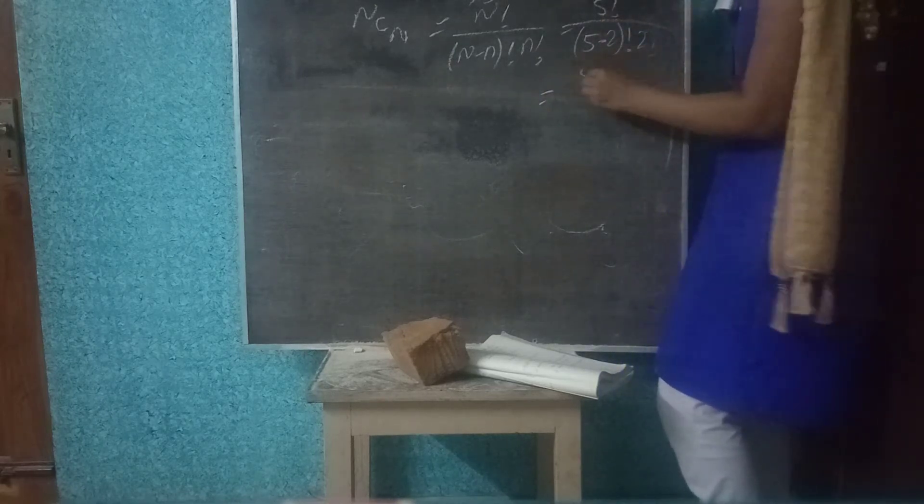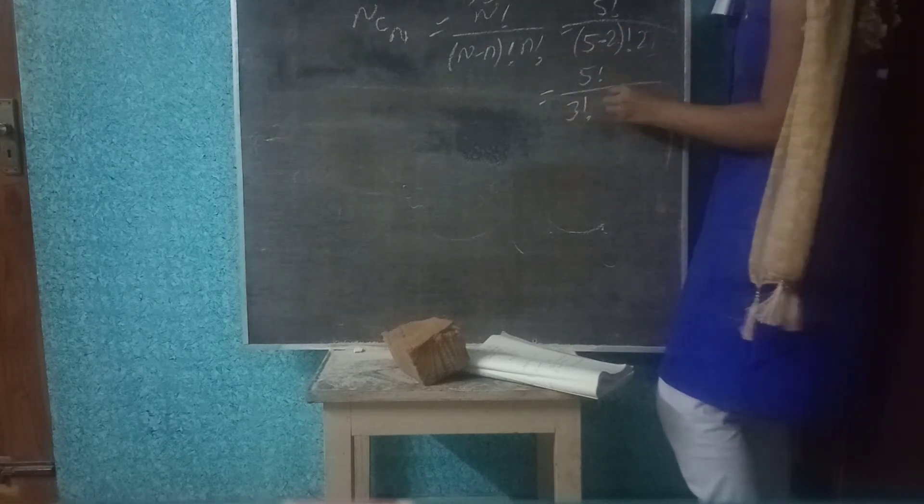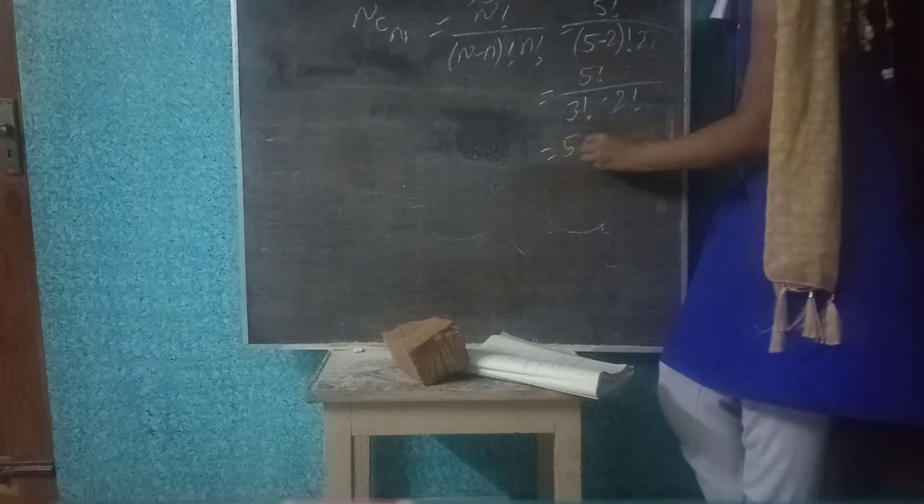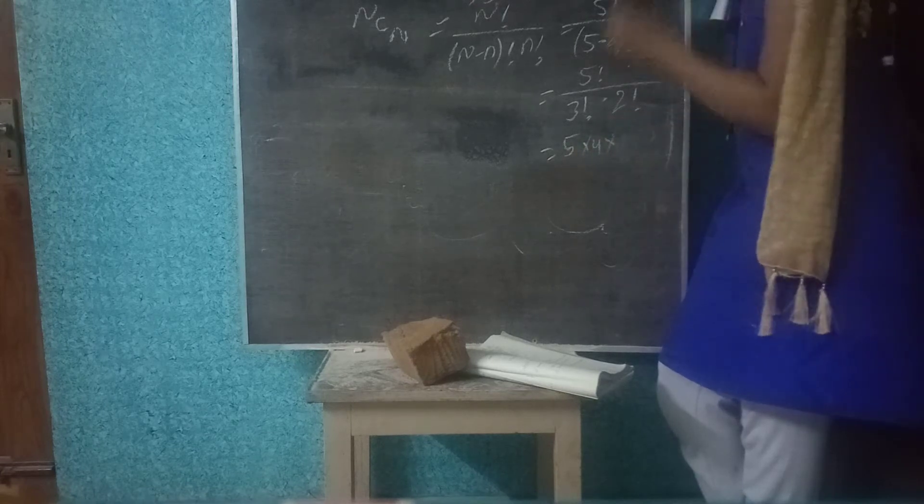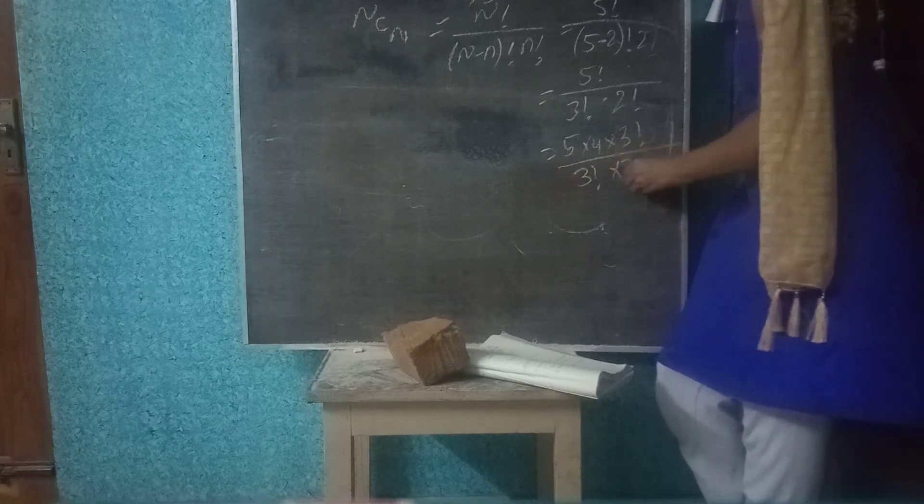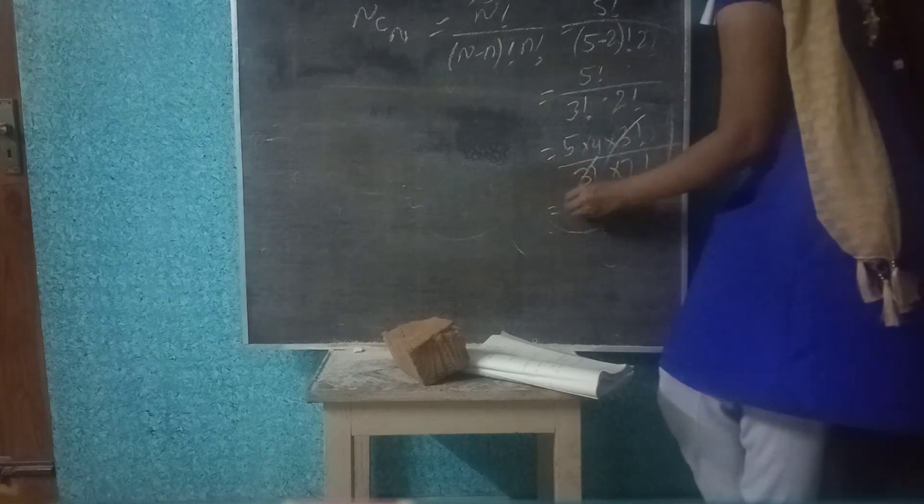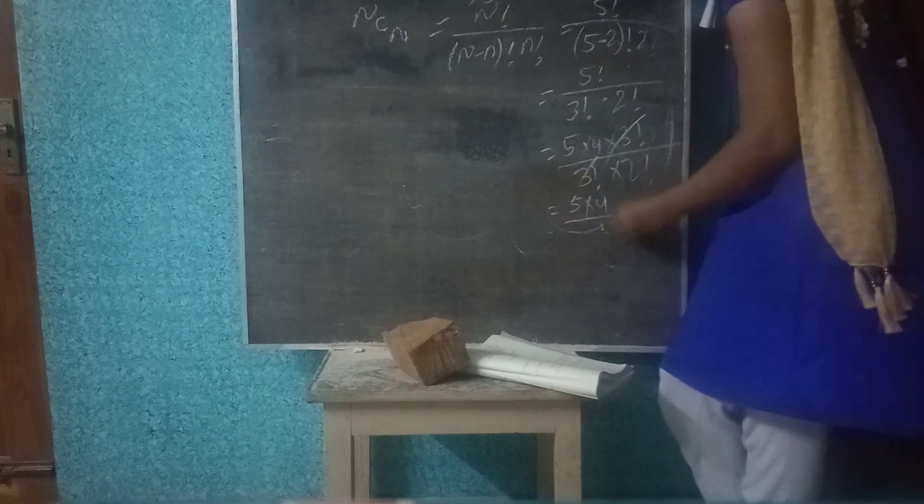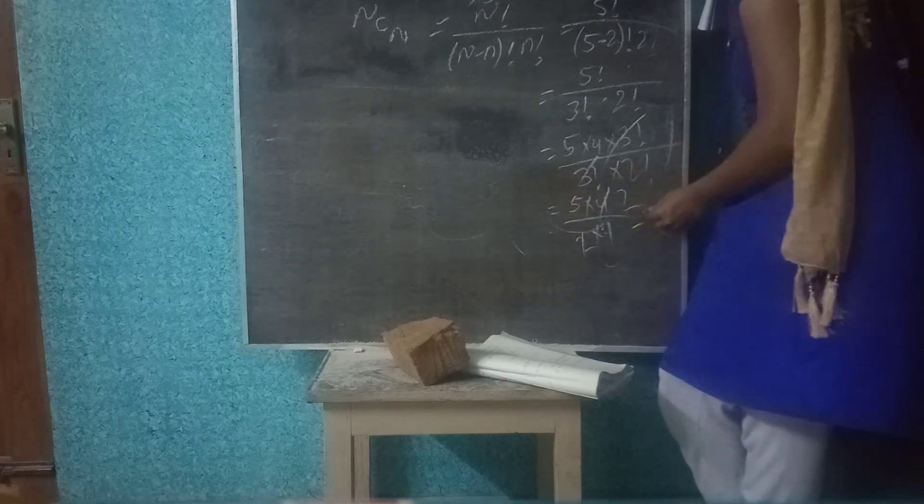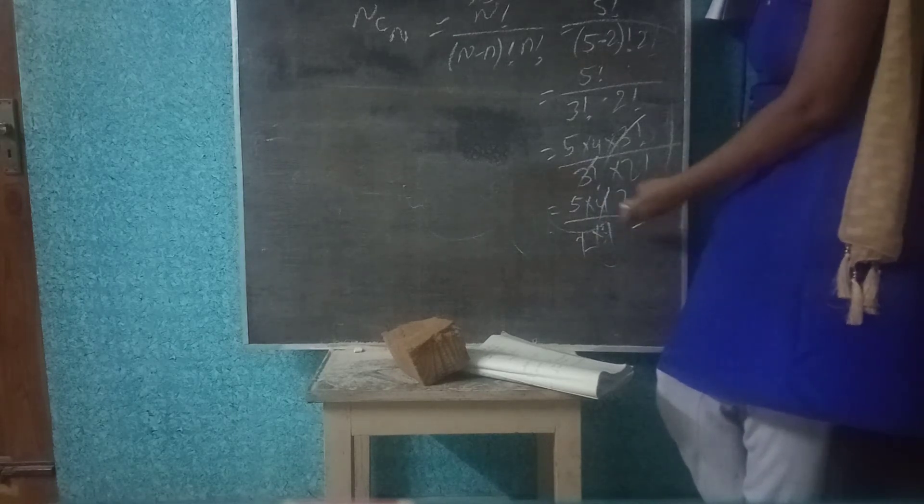So 5 factorial by 5 minus 2 which is 3 factorial times 2 factorial. This gives us 5 times 4 times 3 factorial by 3 factorial times 2 factorial. After cancellation, 5 times 4 by 2 which equals 10. So the value of NCn is 10.